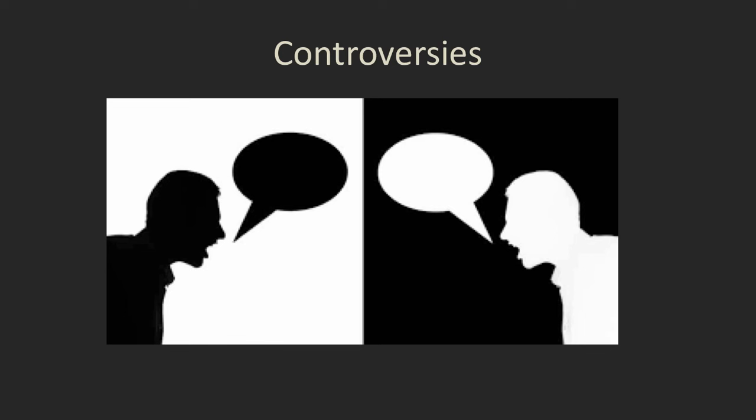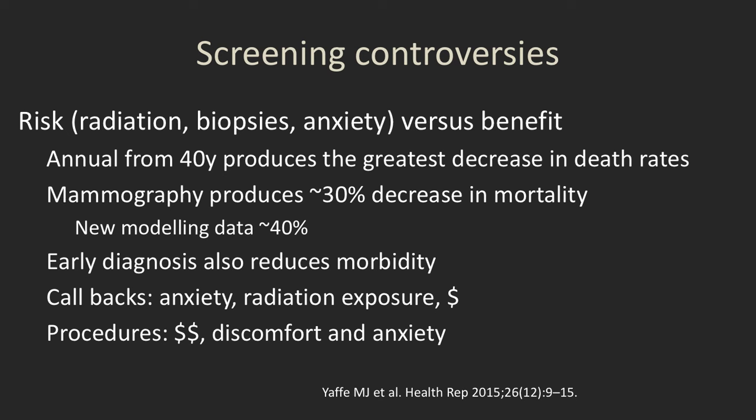There are a lot of controversies surrounding breast screening with mammography. We're always trying to balance risk with benefit: the risk of radiation exposure, the risk of having biopsies, and the anxiety produced versus the benefit. There's a lot of evidence that annual screening from the age of 40 produces the greatest decrease in death rates overall. Mammography produces about a 30 percent decrease in mortality, and new modeling data suggests it's closer to 40 percent. Early diagnosis also decreases morbidity — patients may not need chemo and may have much less extensive surgery.